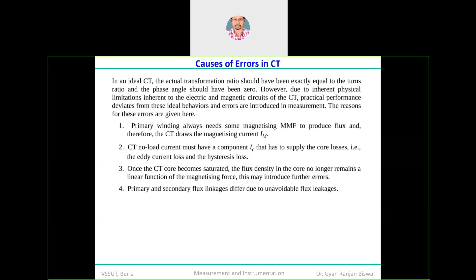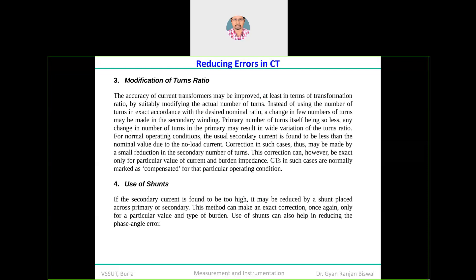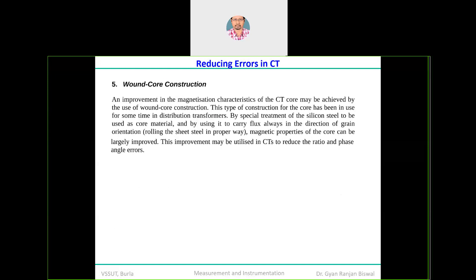We studied two different errors: ratio error and phase angle error. The fourth solution — using a shunt — can help reduce phase angle errors. Finally, wound core construction can be used to further improve the magnetizing characteristics of the CT. As an assignment question: why should wound core construction be preferred over the other option when constructing a current transformer? This wound core construction helps improve CT performance by reducing ratio and phase angle errors.